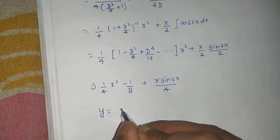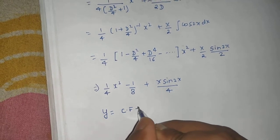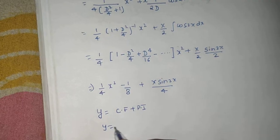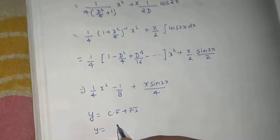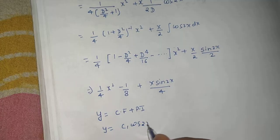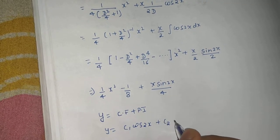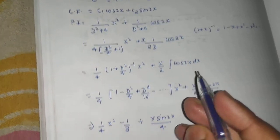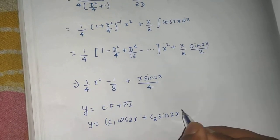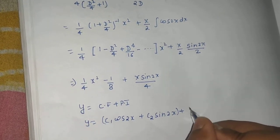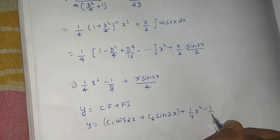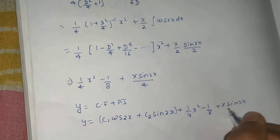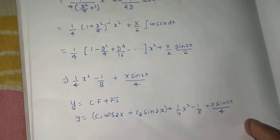So I can end this question by writing y = CF + PI. So y equals to what was your CF: c₁cos(2x) + c₂sin(2x), plus (1/4)x² - 1/8 + (x·sin2x)/4. This is my answer.